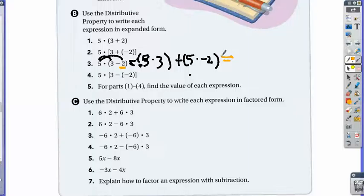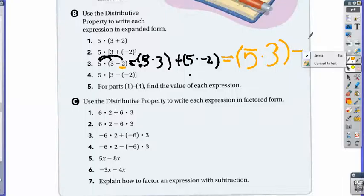Just write a new equation. What's another way of writing it out? You could do 5 times 3, and then you would do minus 5 times 2.